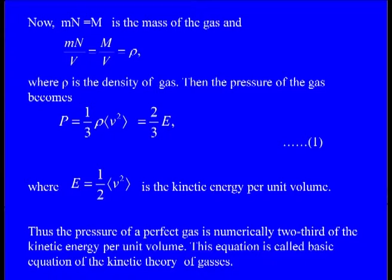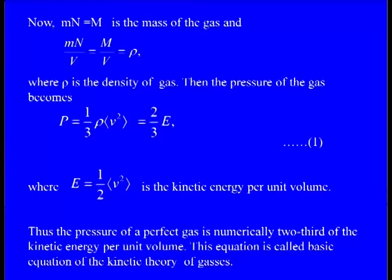The above equation can be rewritten as P = one third rho V² average, where rho is the density of the gas, or equal to two thirds e, where e is the kinetic energy per unit volume, which is half times the root mean square velocity squared.